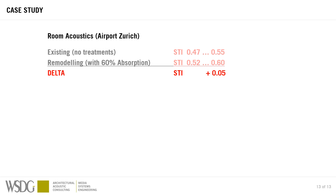So what did we learn here? This case study covers the first part of the speech intelligibility videos. When we do not treat the room, the speech intelligibility is 0.47 — the lower part of the range. By reducing reverberation through adding absorption into the space, we can raise that number to 0.52, a delta of plus 0.05. In terms of speech intelligibility this is pretty massive — clearly audible improvement from this ceiling treatment.